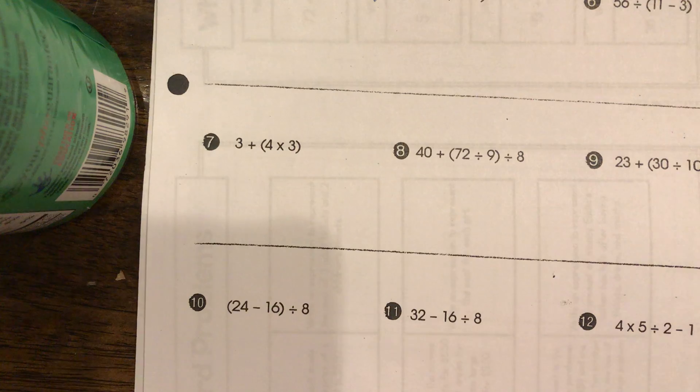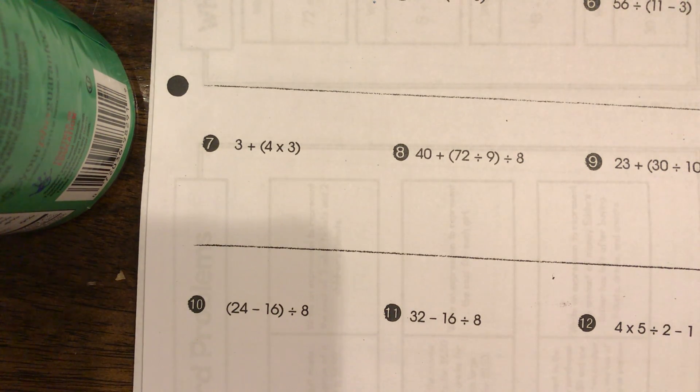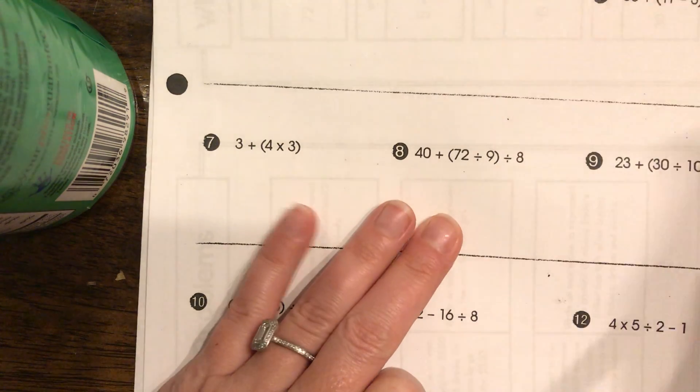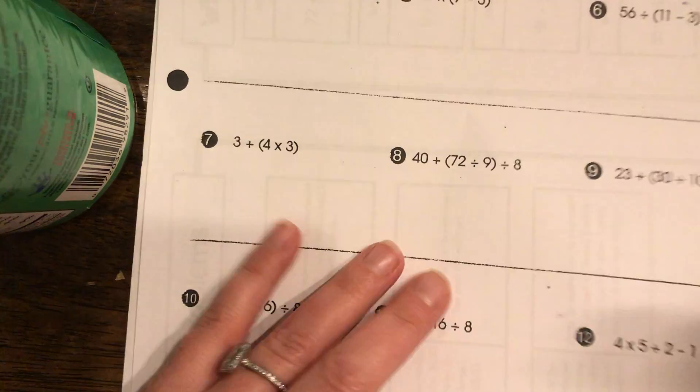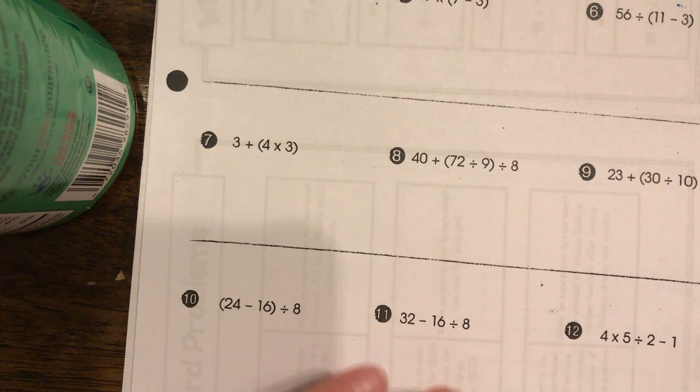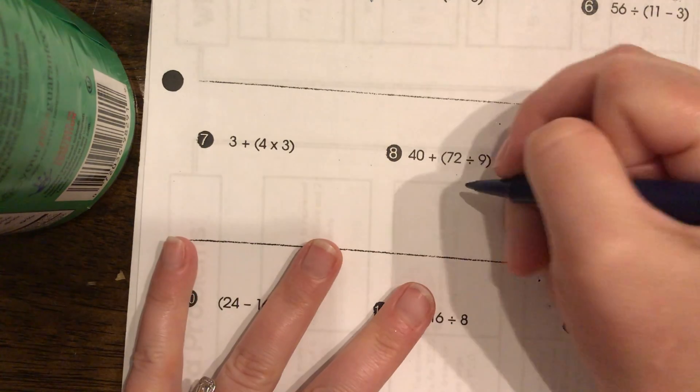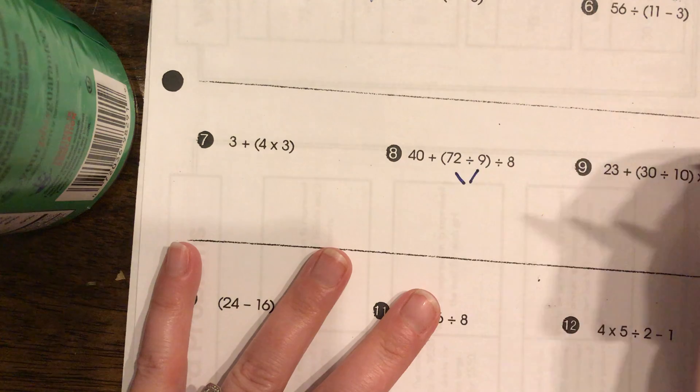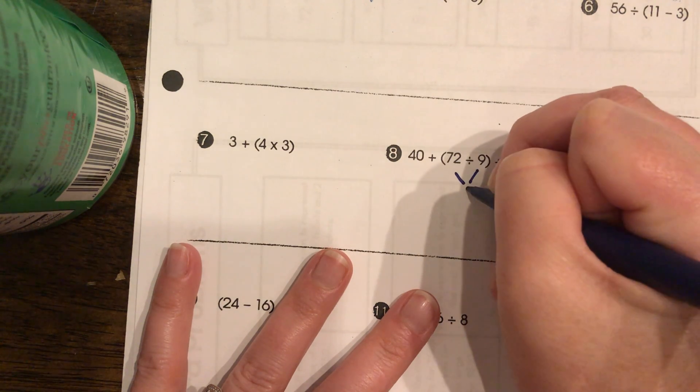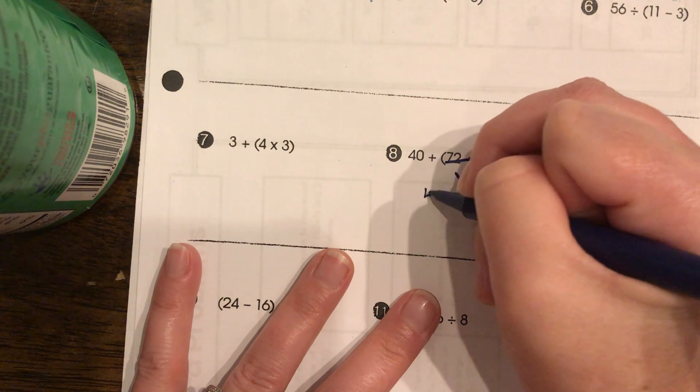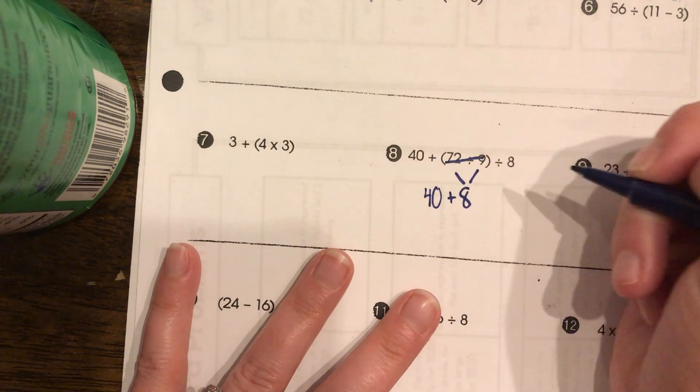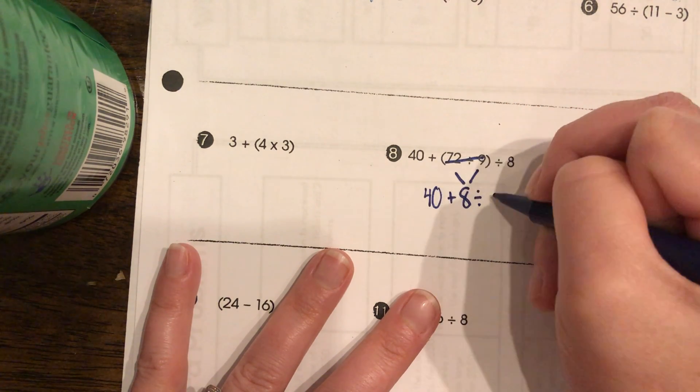Let's look at number eight. First we're going to do the parentheses. I've got 72 or something under my paper. Hang on, just a second. Ah, that's the top of an orange. So 72 divided by nine is eight. Cross that out and fill in the rest of the problem. So, you've got 40 plus eight divided by eight.